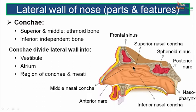Each conca covers a space below it known as the meatus. The space below the inferior nasal conca is the inferior meatus; below the middle nasal conca is the middle meatus; and below the superior nasal conca is the superior meatus. There is also a space above the superior nasal conca below the roof of the nasal cavity, known as the supreme meatus or the sphenoethmoidal recess.